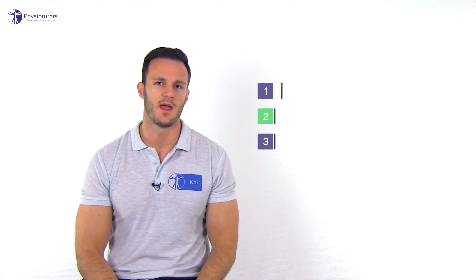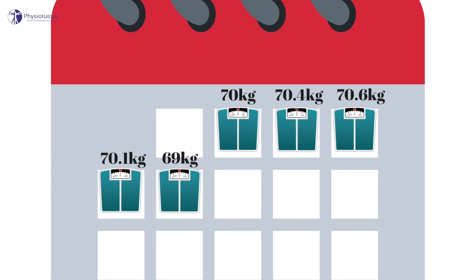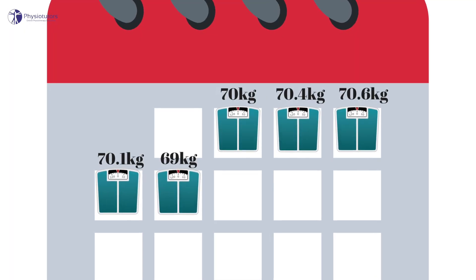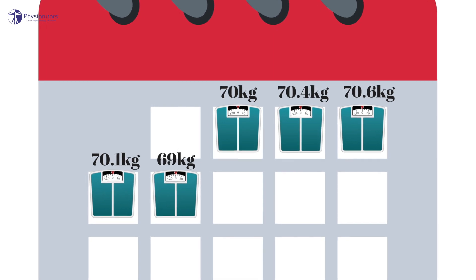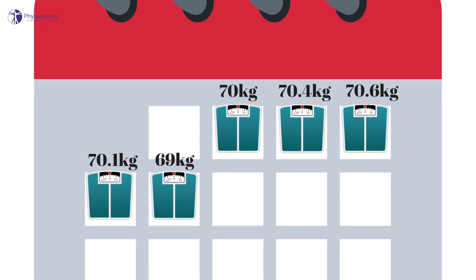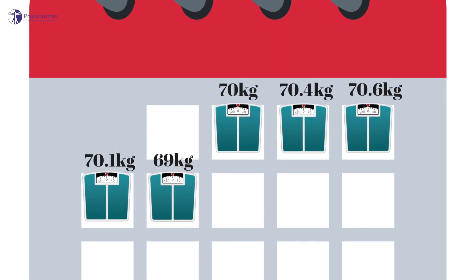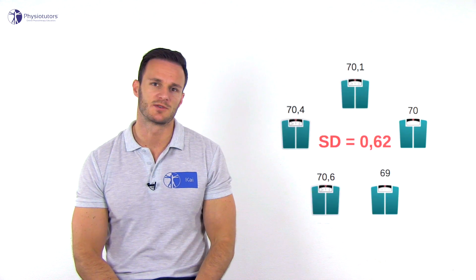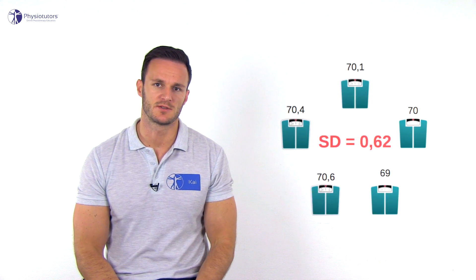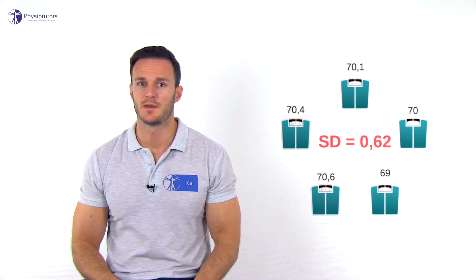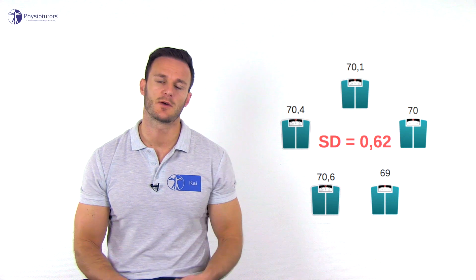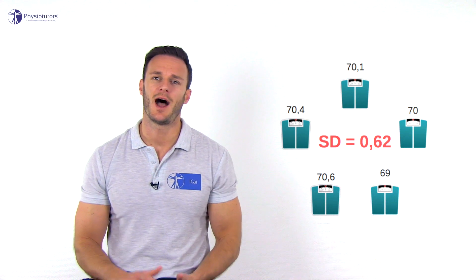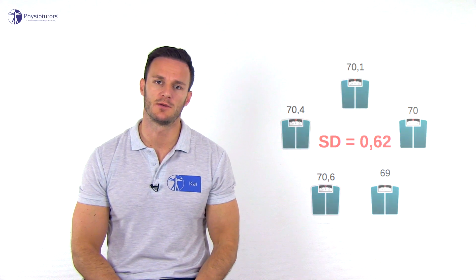An example: if the weight of a person is measured on five different days, the five measurements would probably show some variation. The standard deviation between these repeated measurements represents the agreement, because it answers the question: how good is the agreement between repeated measurements?